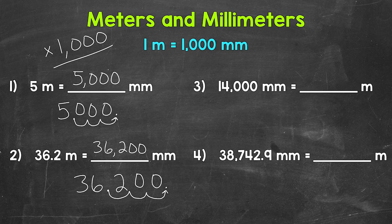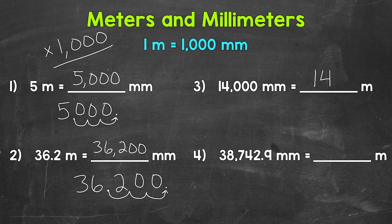Let's move on to number three, where we have fourteen thousand millimeters equals how many meters? Well, each group of one thousand millimeters equals a meter. So we need to see how many groups of one thousand are in fourteen thousand — in other words, fourteen thousand divided by a thousand. That's going to be fourteen. So fourteen thousand millimeters equals fourteen meters. When we go from millimeters to meters, we divide by one thousand.